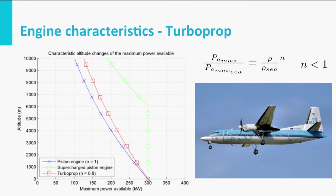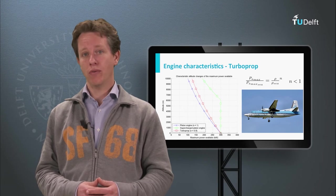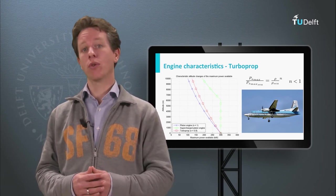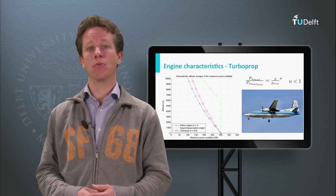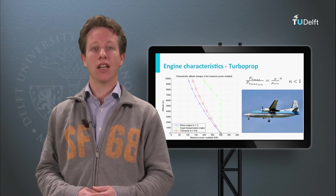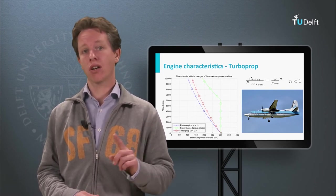Now, combined with the power required curve in the performance diagram for various altitudes, we can calculate the maximum airspeed as a function of altitude. I have already done the calculation for you, but there is also a nice homework assignment where you are asked to calculate the maximum airspeed as a function of altitude for one specific aircraft yourself.